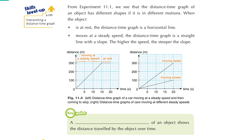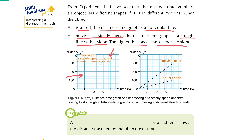Once again, in these two graphs, we should note that when the displacement-time graph is a horizontal line, the object is at rest. You can see there is a portion of time where the object is at rest. And if it moves at a steady speed, we will have a straight line with a slope. The first part of the graph shows the object moving at a constant speed, and the higher the speed, the steeper the slope.